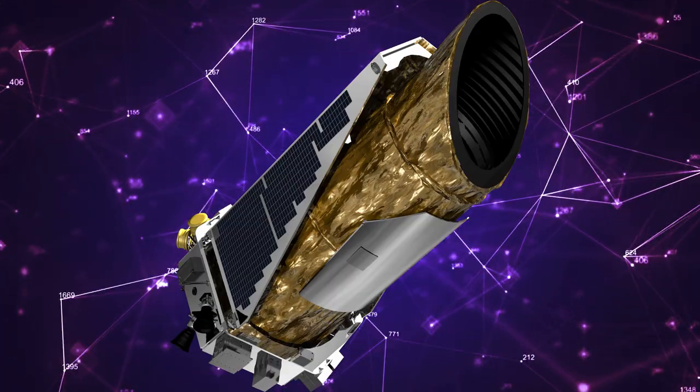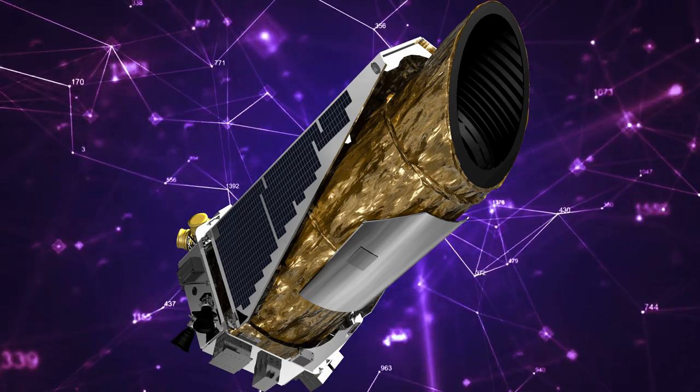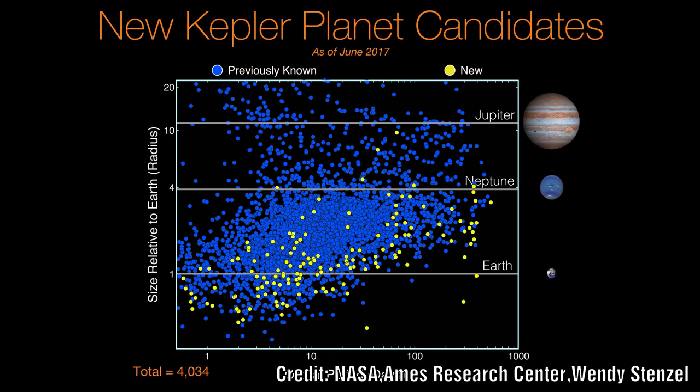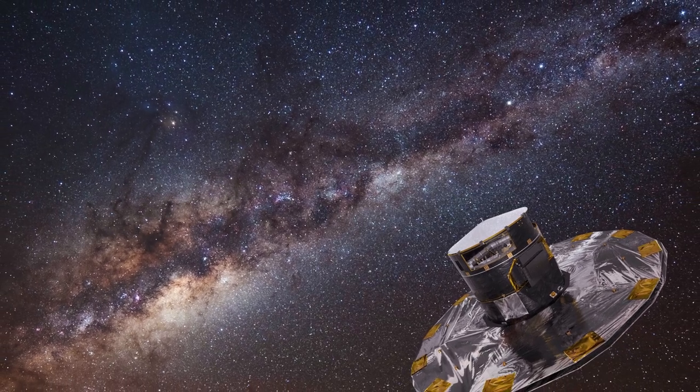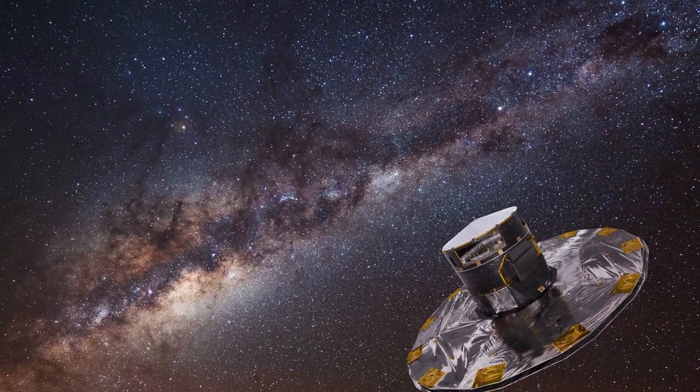The first survey is the Kepler mission, which so far has found thousands of exoplanets orbiting other worlds, including super-Earths and sub-Neptune planets. The other survey is the Gaia mission, which provided an essential ingredient to measuring the sizes of planets' hosting stars.